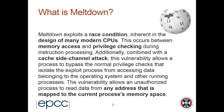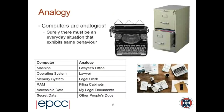From Wikipedia: Meltdown exploits a race condition inherent in the design of modern CPUs. This occurs between memory access and privilege checking during instruction processing. Combined with a cache side-channel attack, this vulnerability allows a process to bypass normal privilege checks and read data from any address mapped to the current process's physical memory. Hopefully by going through this analogy I'll explain all these features.